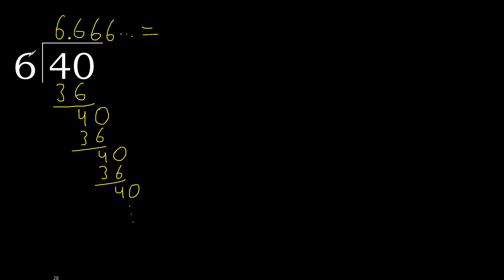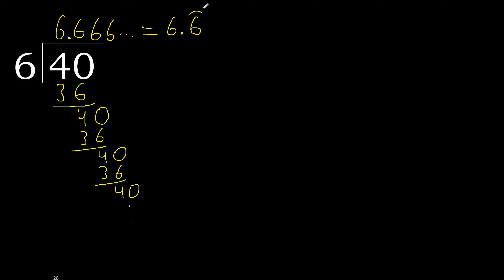40 divided by 6 is — after the point, 6 repeats. Therefore, like this: 6 repeating, repeat, repeat. Like this — or like this.